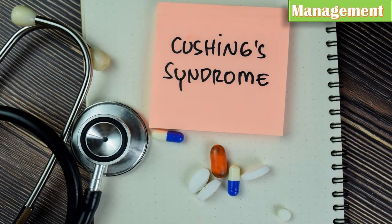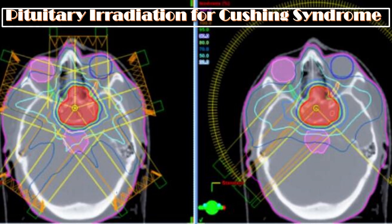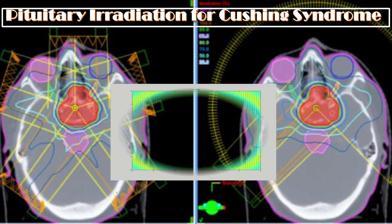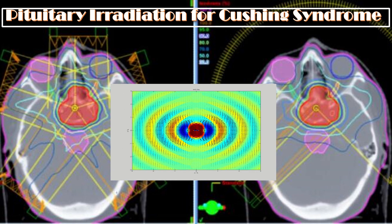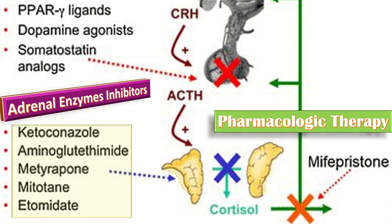Management of Cushing syndrome: treatment to restore hormonal balance may necessitate radiation, drug therapy, or surgery. Patients with pituitary-dependent Cushing syndrome with adrenal hyperplasia or severe symptoms such as psychosis, poorly controlled diabetes mellitus, or osteoporosis may require pituitary irradiation. For pharmacologic therapy, adrenal enzyme inhibitors such as ketoconazole, aminoglutethimide, metyrapone, mitotane, and etomidate may be used to reduce hyperadrenalism.